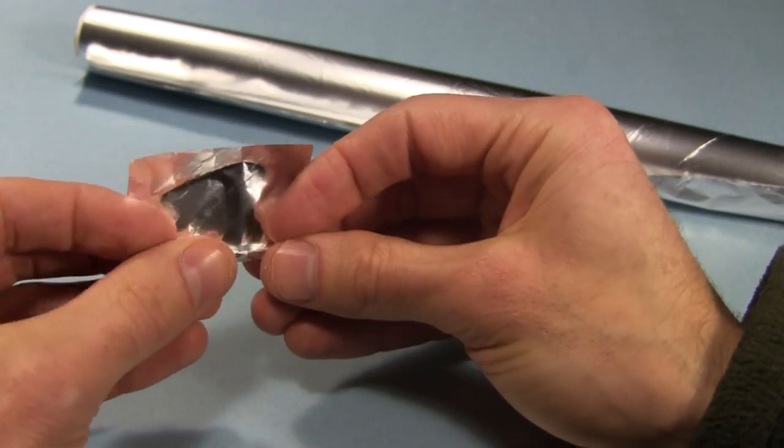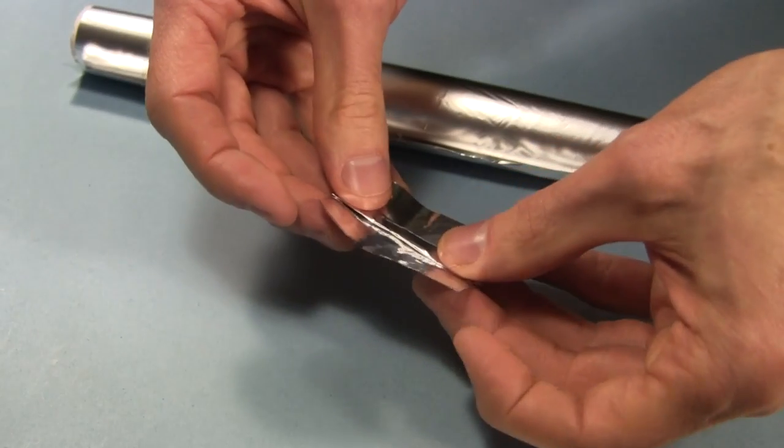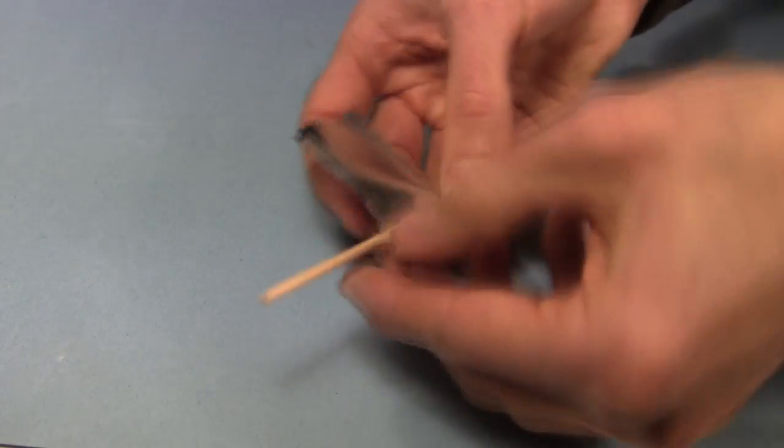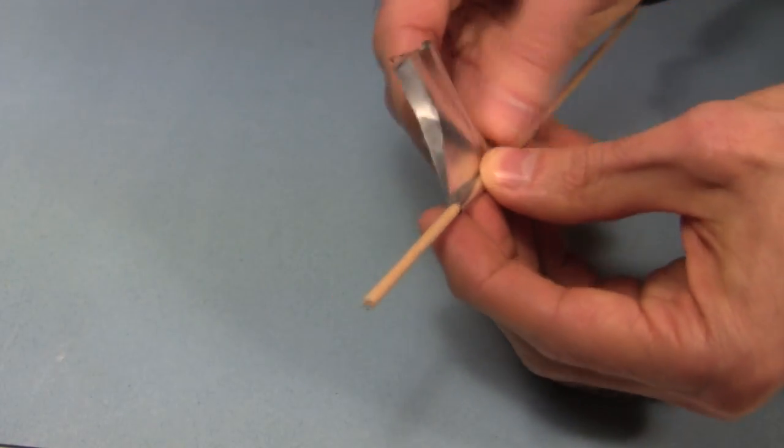I then take a piece of aluminum foil and roll it up. I take another piece and put the rolled up piece in the middle. I fold it over. I then use a piece of dowel to form that into a cylinder.